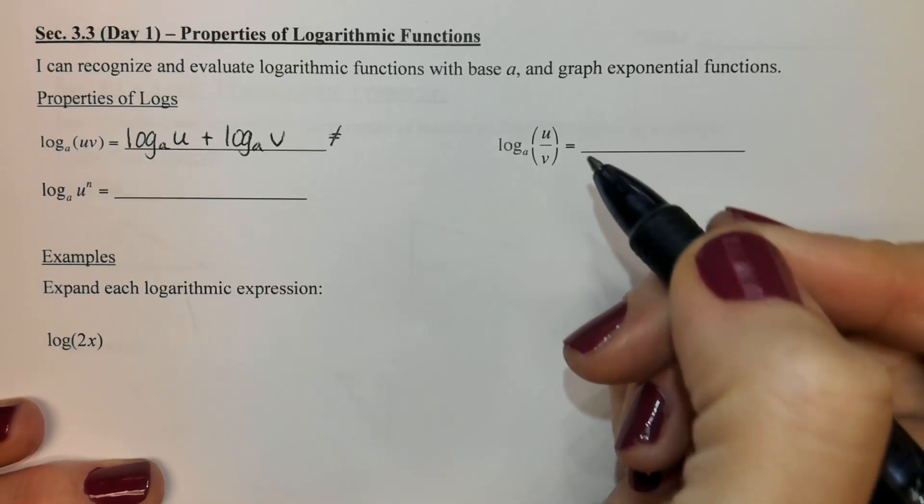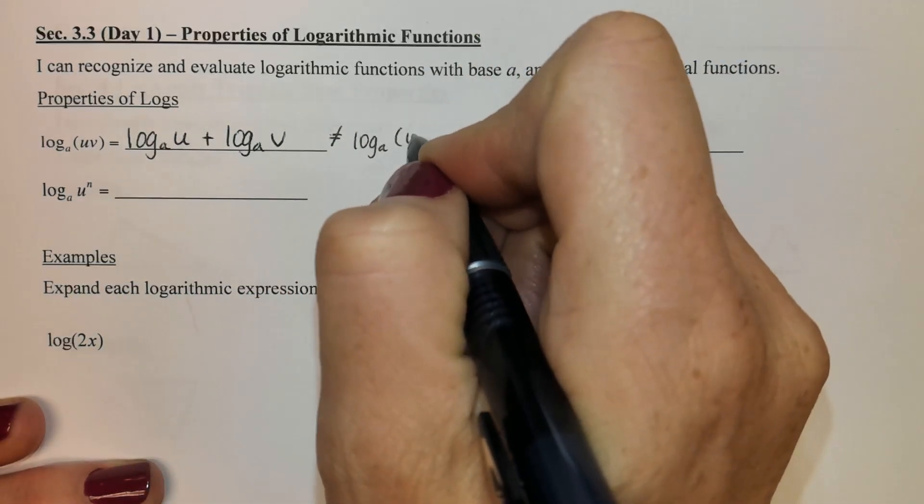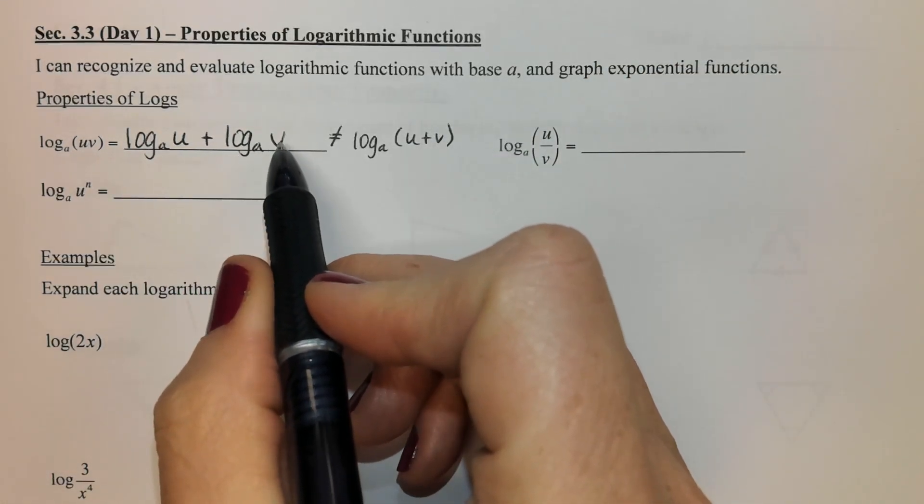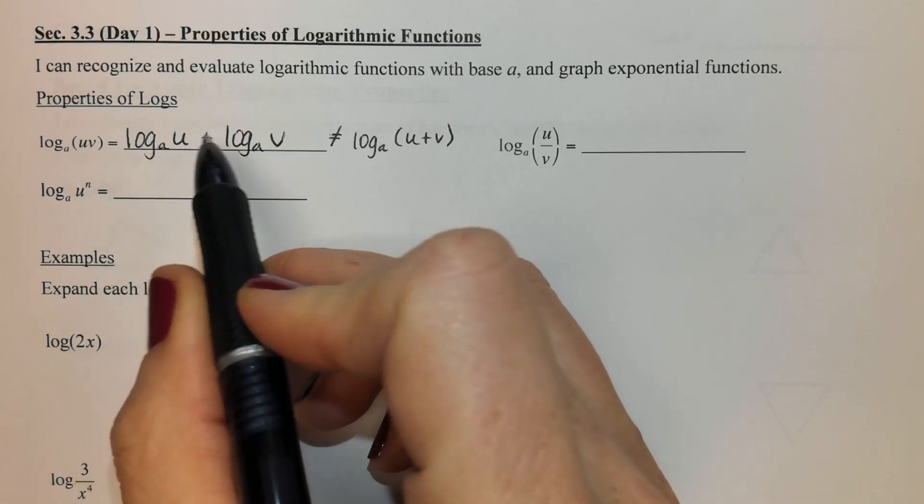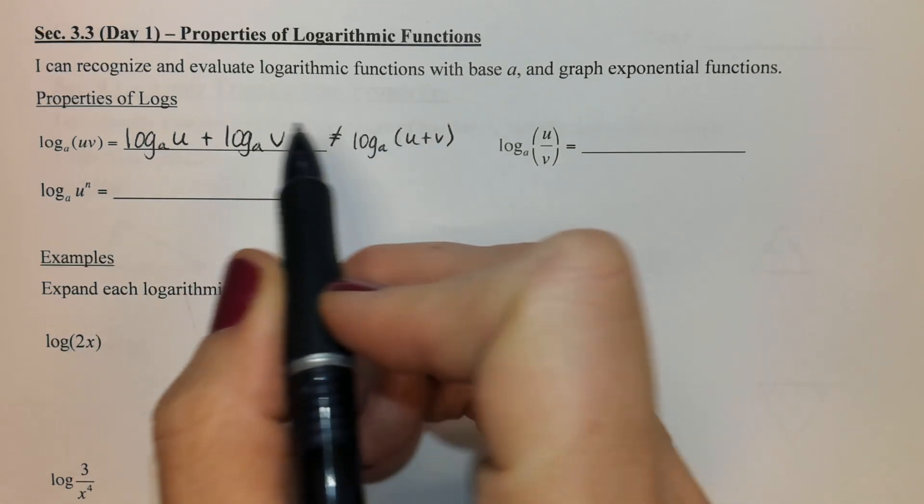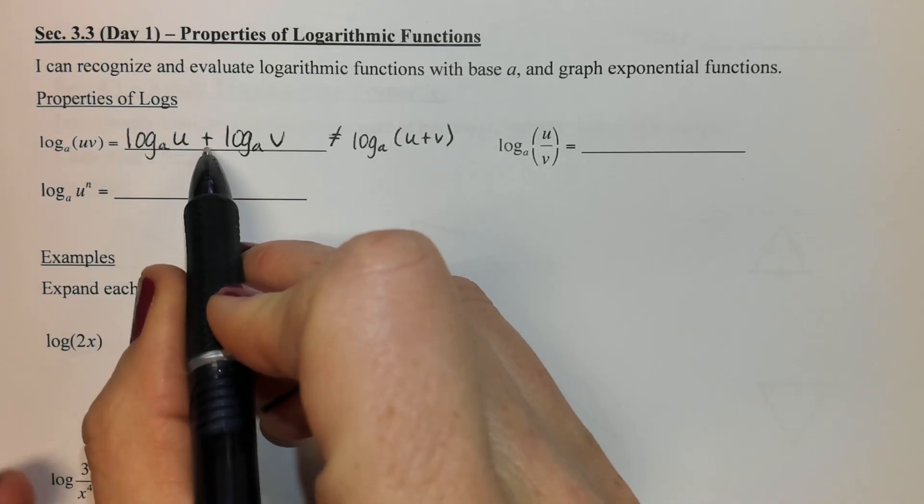What this is not, what students often do, is they will just turn the parentheses into addition, but we need to completely separate the two values, the u and the v, whatever those happen to be. We need to fully separate them and give them each a log. So it's not one log with addition, it's separating and creating a log for each of them with addition.